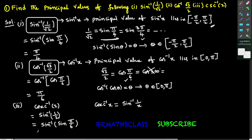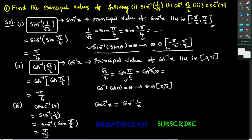Now you observe it looks like sin inverse of sin theta. Sin inverse of sin theta equals theta, when theta belongs to the closed interval minus pi by 2 comma pi by 2. So sin inverse of sin pi by 6 is pi by 6.